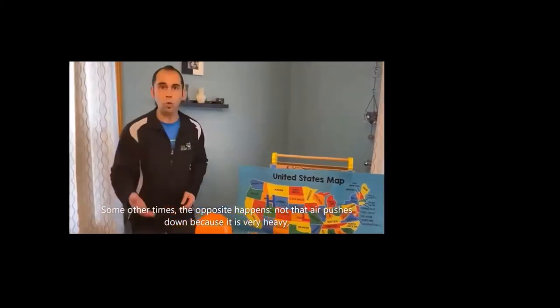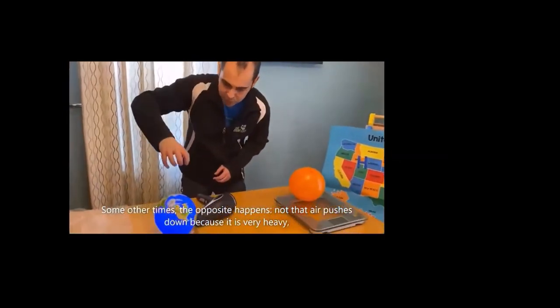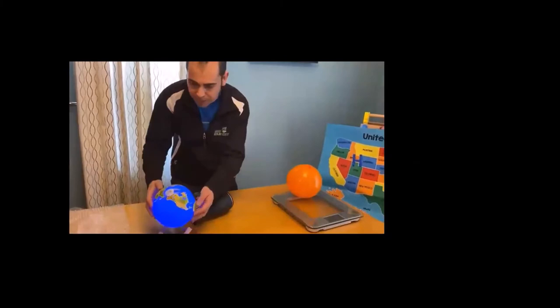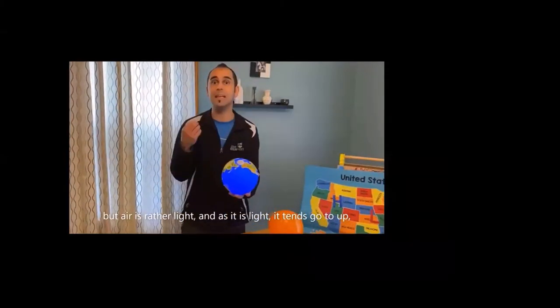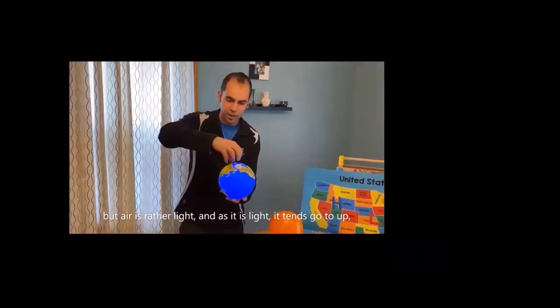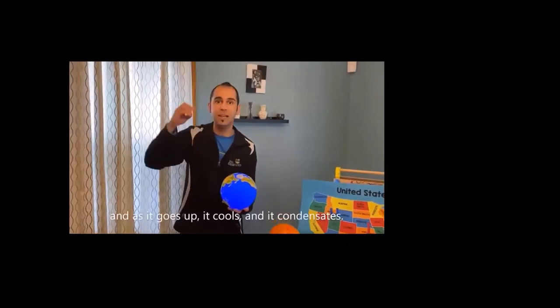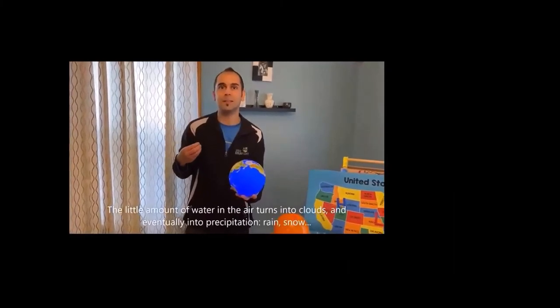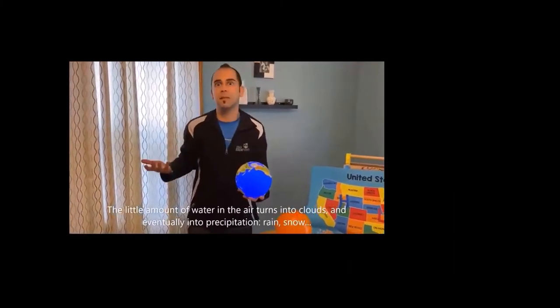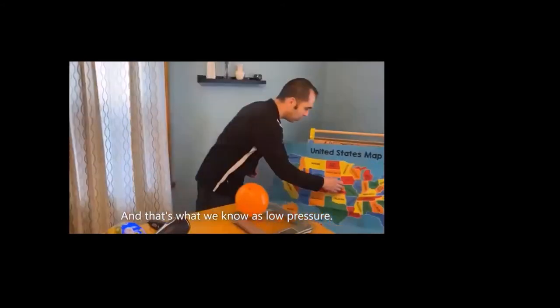Sometimes, the exact opposite occurs. Not that the air pushes down because it is very heavy, but sometimes the air is light. And as it is light, it rises upward. And when rising upward, it cools and condenses. That little bit of water that was in the air will transform into clouds and, finally, into precipitation, rain, snow. And that is called low pressure. Remember, high pressure, happy weather, good weather. Low pressure, lousy weather, bad weather.